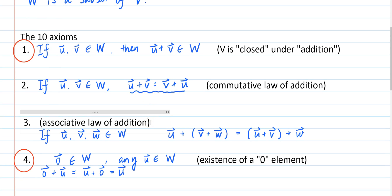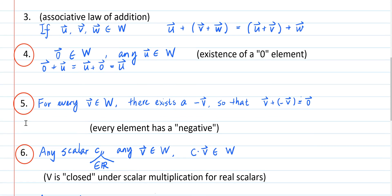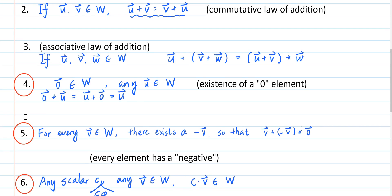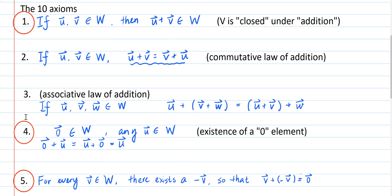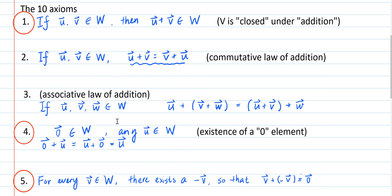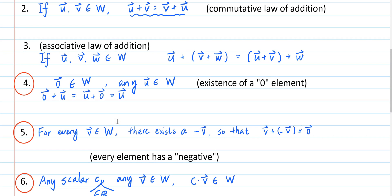Likewise, for some subsets of V, you're going to find that it may not contain a zero element which means axiom 4 is not true and it may not make axioms 5 and 6 true. So that means to verify that a subset W of V is a subspace, what you really need to verify are these four circled axioms. So at this point, we have reduced the task of verifying 10 axioms to verifying only 4 axioms.